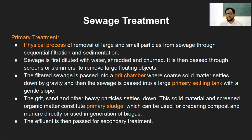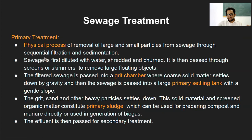Primary sludge is the thick material accumulated as sediment. It can be used for preparing compost, manure, and for generating biogas - since it contains a lot of organic material. The remaining effluent, the top portion of the water, is passed for secondary treatment. So the sequence is: screening first, then grit chamber for sedimentation, then the primary settling tank generating primary sludge, and the sewage effluent is passed for secondary treatment.